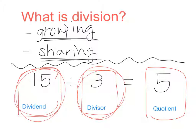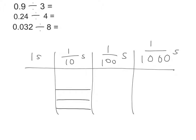We're going to use what we know about place value to help us. You don't need to write this part down yet — I'll tell you when to start again. This first problem: we have 9 tenths divided by 3. If I wanted to model 9 tenths in my place value chart, Alina says I would have to draw 9 disks in the tenths place. So I draw 1, 2, 3, 4, 5, 6, 7, 8, 9 disks in the tenths place.